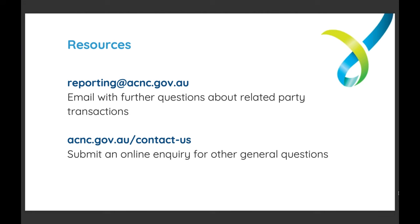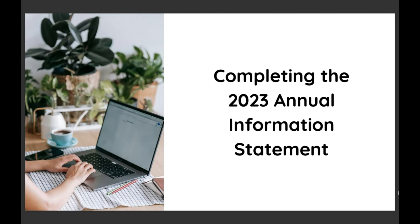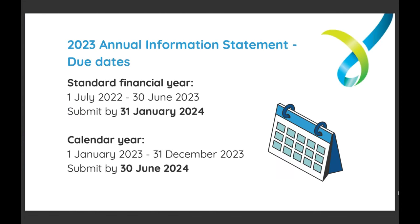While on our website, you can also look at our 2023 AIS guide, which has details about completing your AIS, at acnc.gov.au/2023AISguide. Charities can also email our reporting inbox at reporting@acnc.gov.au for questions about related party transactions. For other general questions, including help submitting the 2023 AIS, you can submit a general inquiry in the charity portal or from our Contact Us page.